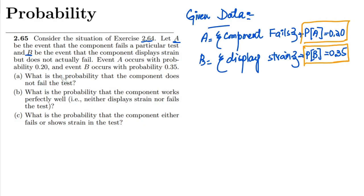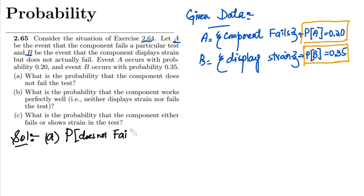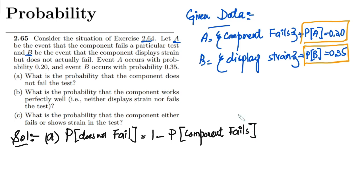For part A, I have to find the probability that the component does not fail the test. This can be written as 1 minus the probability of event A, which is the event that the component fails. The probability of A is given as 0.20, so 1 minus 0.20 gives us 0.80.